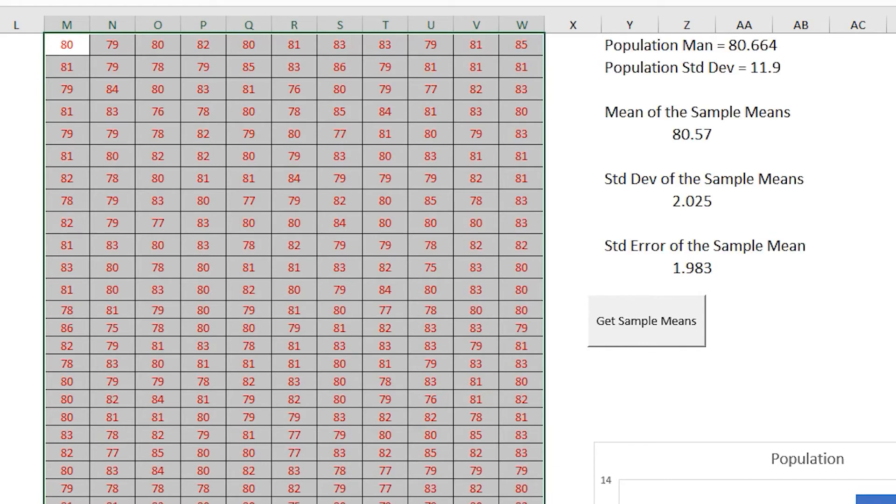So what do we have now? Population fixed will not change. Mean of sample means 80.57, 80.664, pretty close. Now look at that. Standard deviation of the sample means is 2.025. Standard error 1.98. Again pretty close to each other, difference of 0.04, 0.03, very close. So what has happened is that standard deviation of the sample means has gone down and naturally we took a bigger sample.